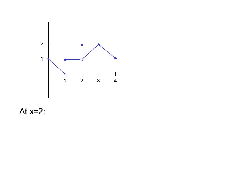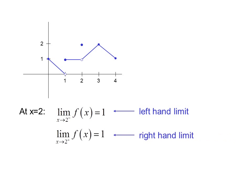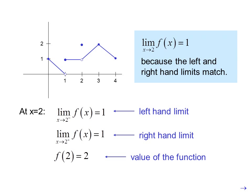At x equals two: the limit as x approaches two from the left of f of x equals one, and the limit as x approaches two from the right of f of x equals one. So approaching from the left and from the right, the y value approaches one from either side. The value of the function is two, but we're looking for limits so we don't care. Since the left-hand and right-hand limits match, the limit as x approaches two of f of x equals one.